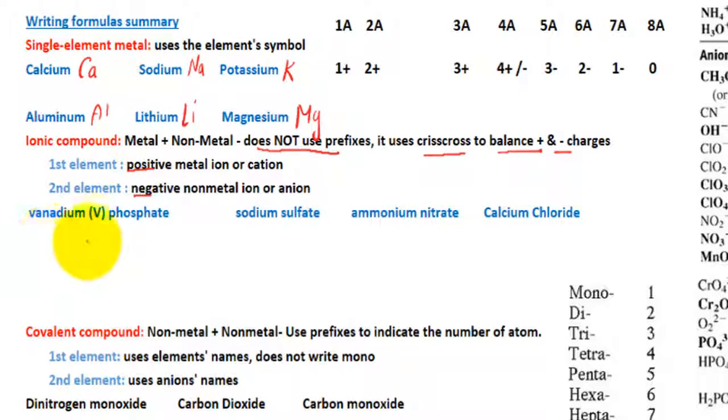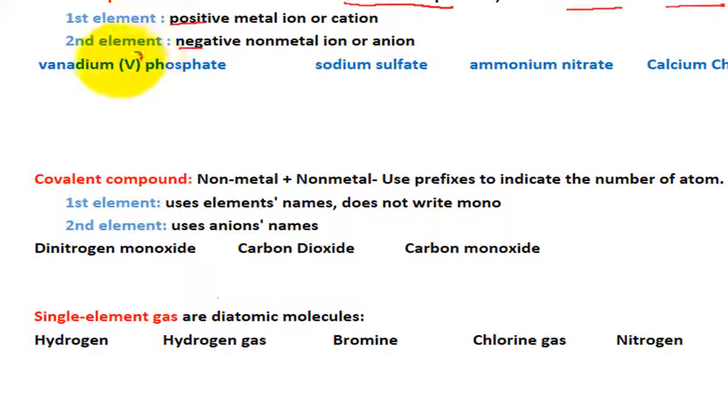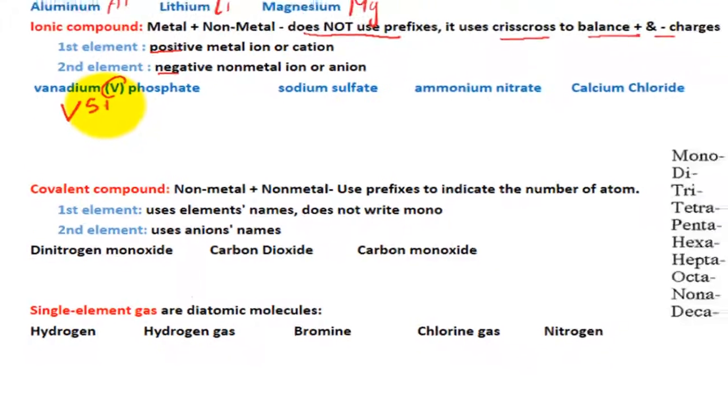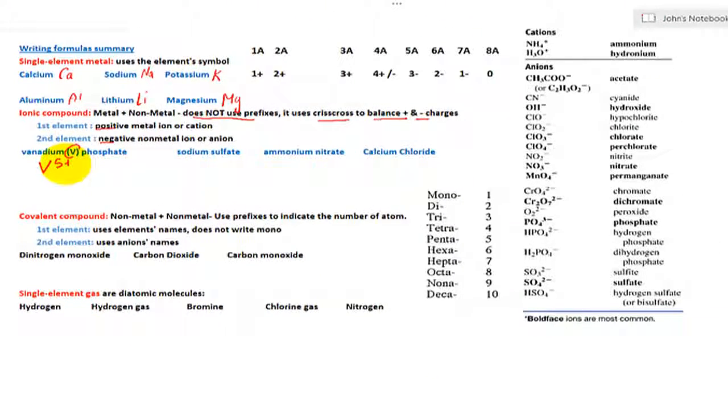So here we have vanadium. That Roman numeral V indicates the positive charge of 5+ for vanadium. So if we know the symbol for vanadium, and there is 5, so that would be 5+. We don't have to look at the periodic table for the charges. And then phosphate is the polyatomic ion all the way over here. PO4 3-. So we have PO4 3-.